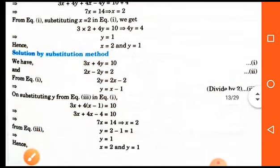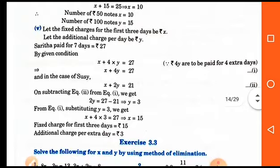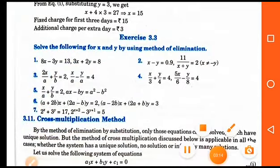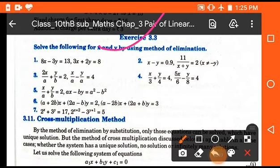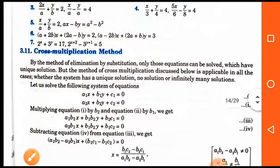By this method we can easily eliminate one coefficient and find the value of the other variable. This is the method of elimination. Exercise 3.3 is based on the elimination method, so this is your homework. Now the next method is the cross multiplication method, which is an important but somewhat difficult method.